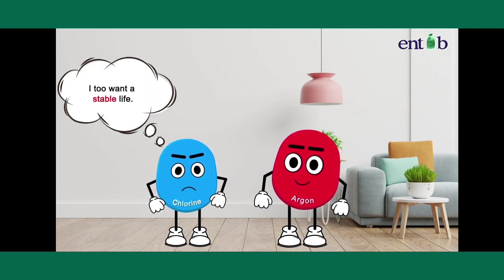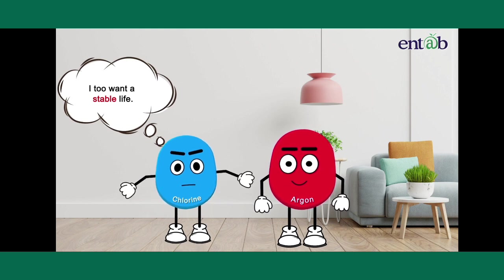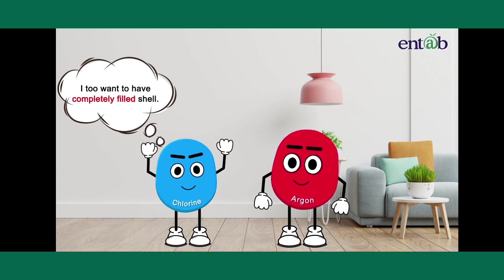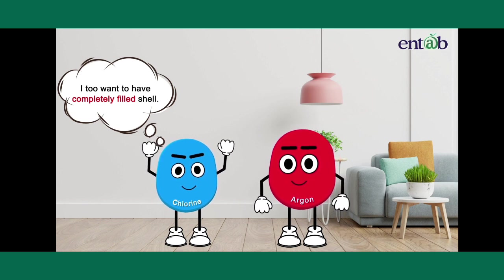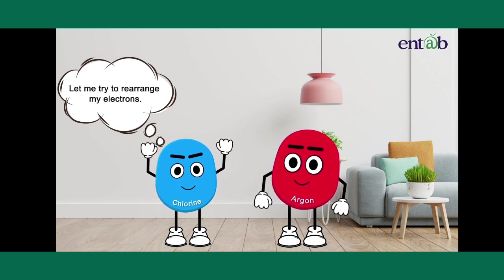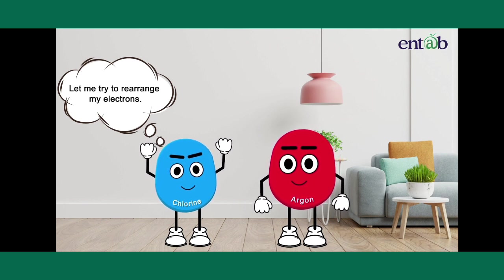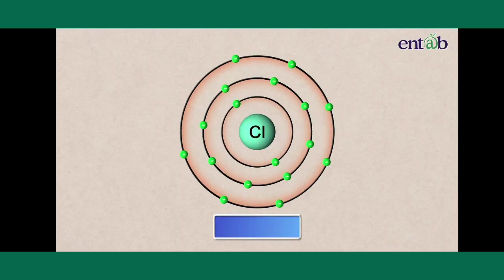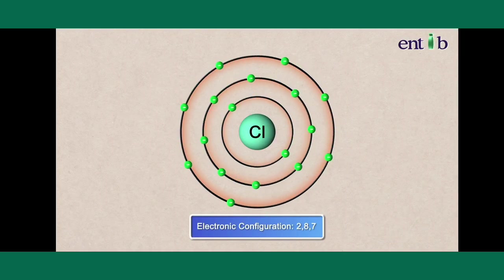Chlorine finally knew the formula for a happy, contented and stable life. Now, chlorine wanted a completely filled valence shell as well. But it had only seventeen electrons.